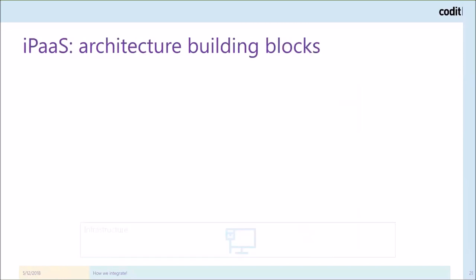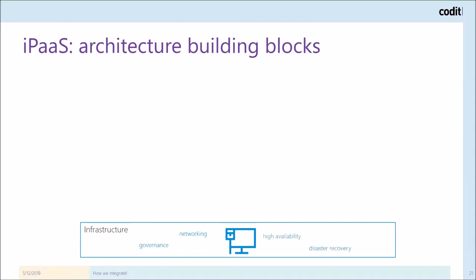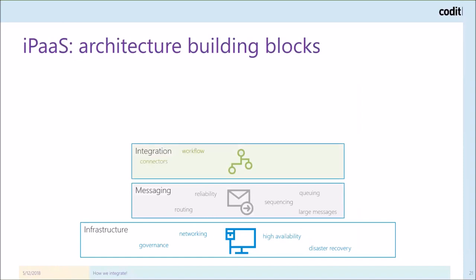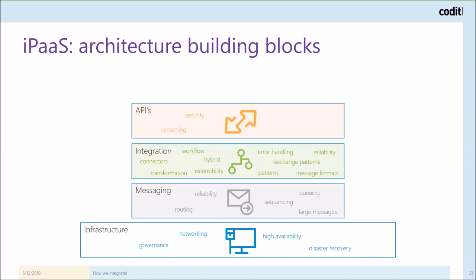We made our own version of this — the architecture building blocks we defined. First, a solid infrastructure provided by the Azure cloud. On top of that, a messaging layer which provides routing and reliability in a store-and-forward way. The integration layer is of course where all the magic happens: transformations, different protocols supported, and connectivity towards backend systems. If you are dealing with APIs, a separate API layer is important to have the right versioning, security, and governance strategies.